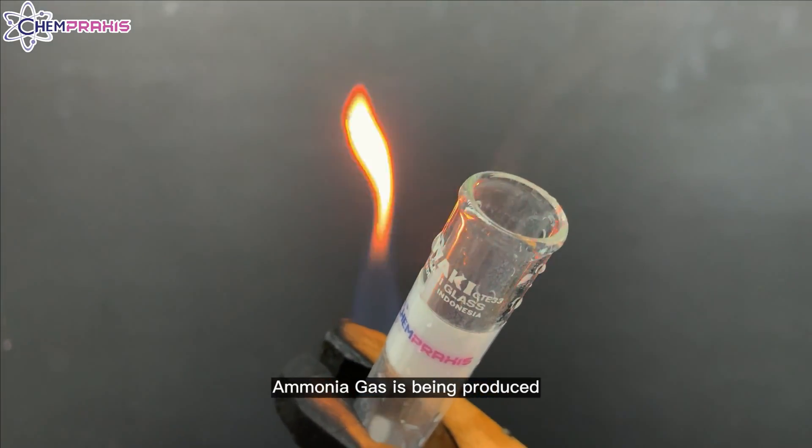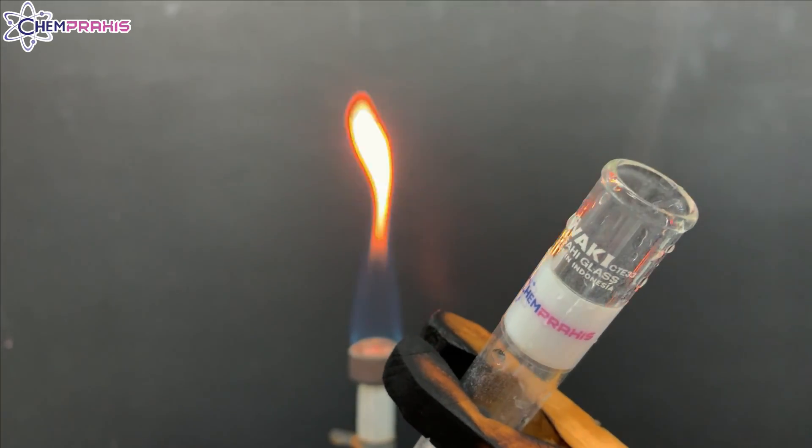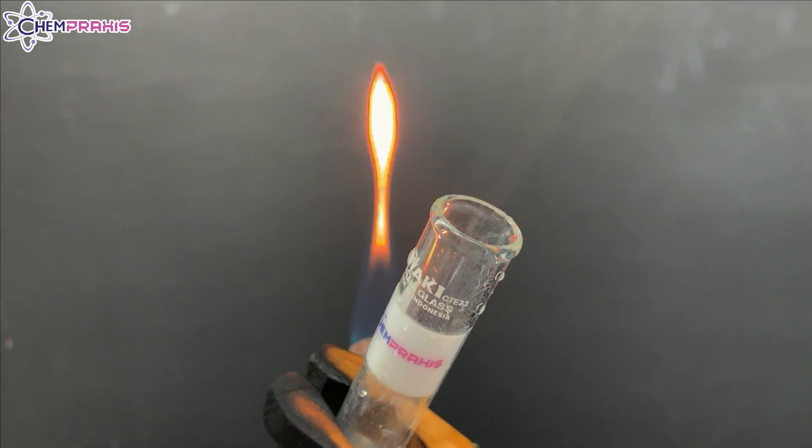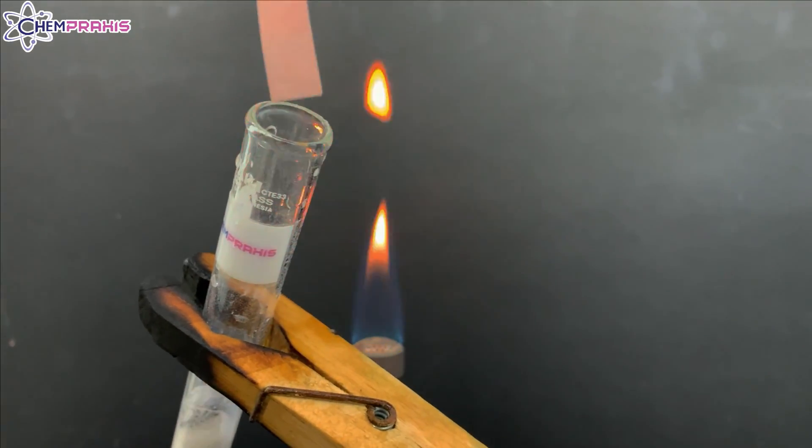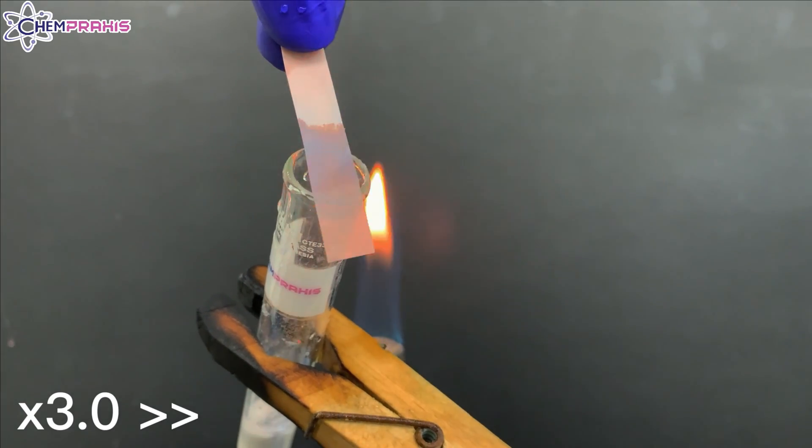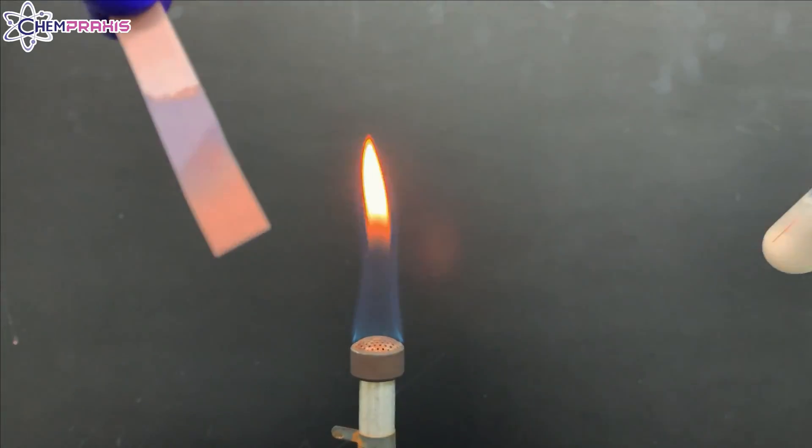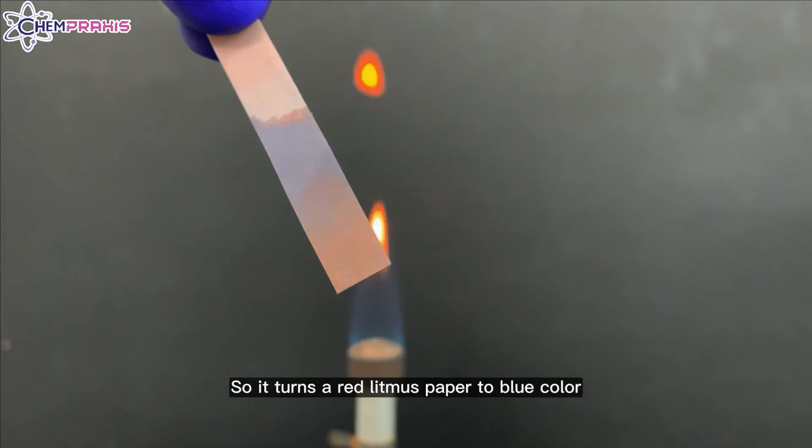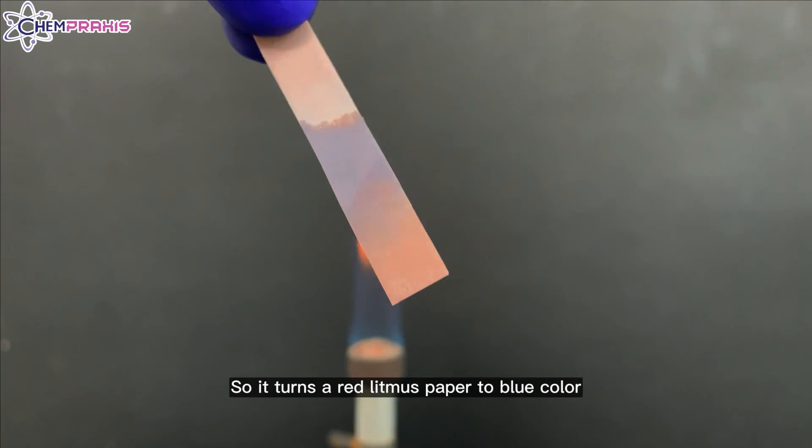Ammonia gas is being produced. Ammonia gas is basic so it turns the red litmus paper to blue color.